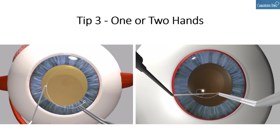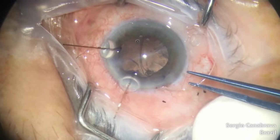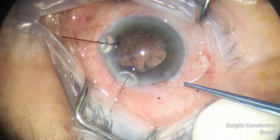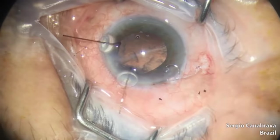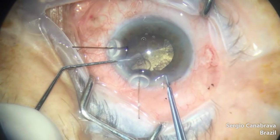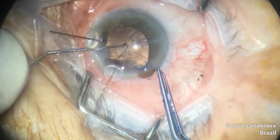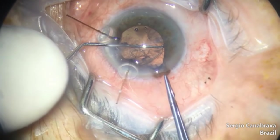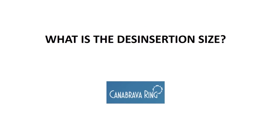Tip three: one or two hands? In my opinion, I prefer two hands, as you can see in the image. Let's go to the video — pay attention. There are two hooks supporting the bag. In this case, I did the phacoemulsification first, and now I'm implanting the CTR. You can see in my left hand the SISC-Hook, and I will connect the SISC-Hook in the final CTR hole, and implant the CTR inside the bag. I prefer two hands.